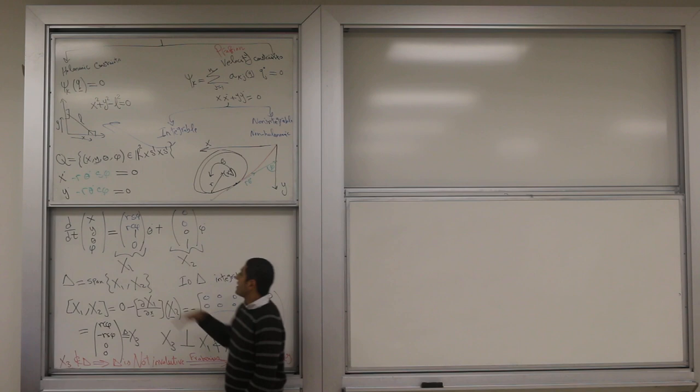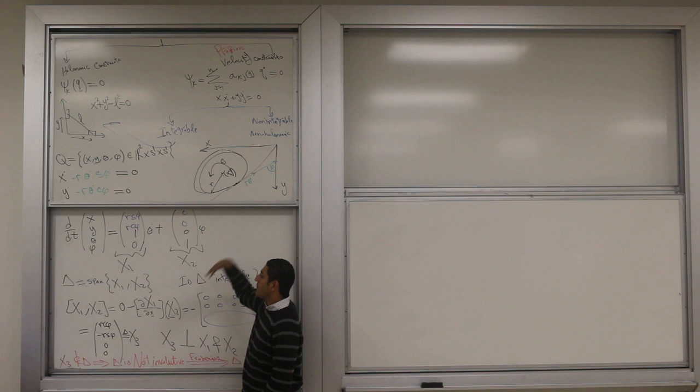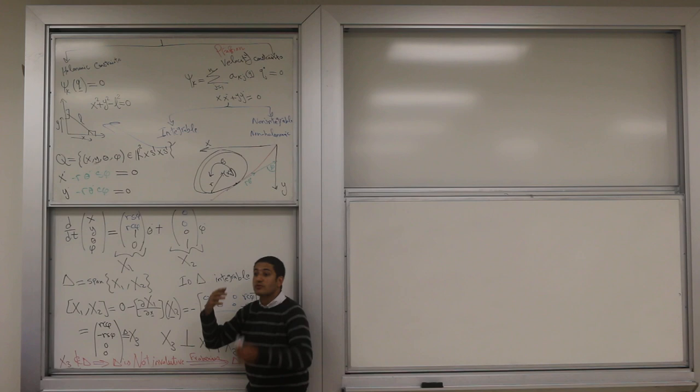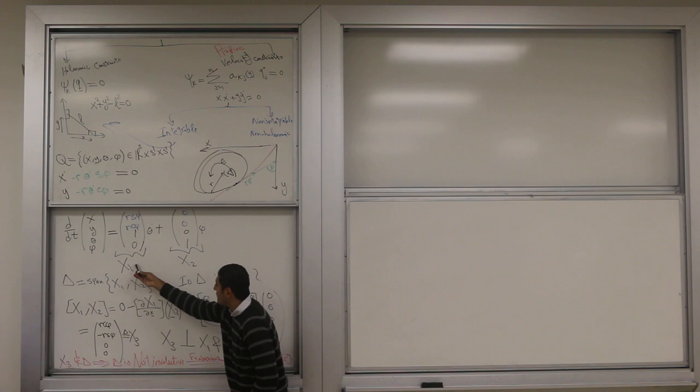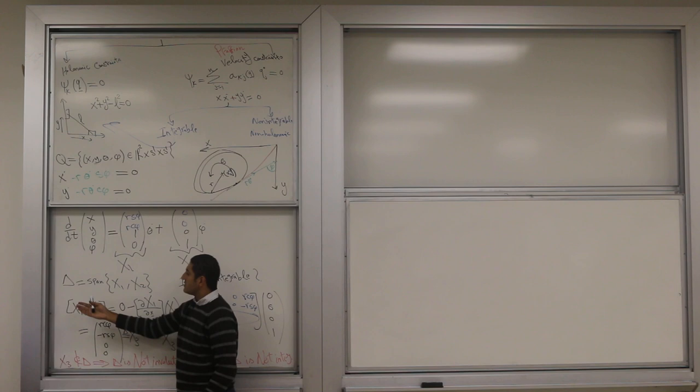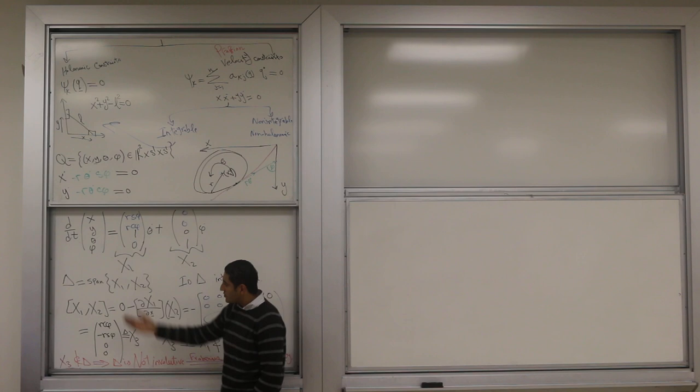I have two allowed velocity vectors on a four-dimensional space. Do they cover just two-dimensional space or do they really cover the four-dimensional space? It turns out to hinge on integrability of x1 and x2. You collect them in a distribution and ask about the integrability of the distribution.